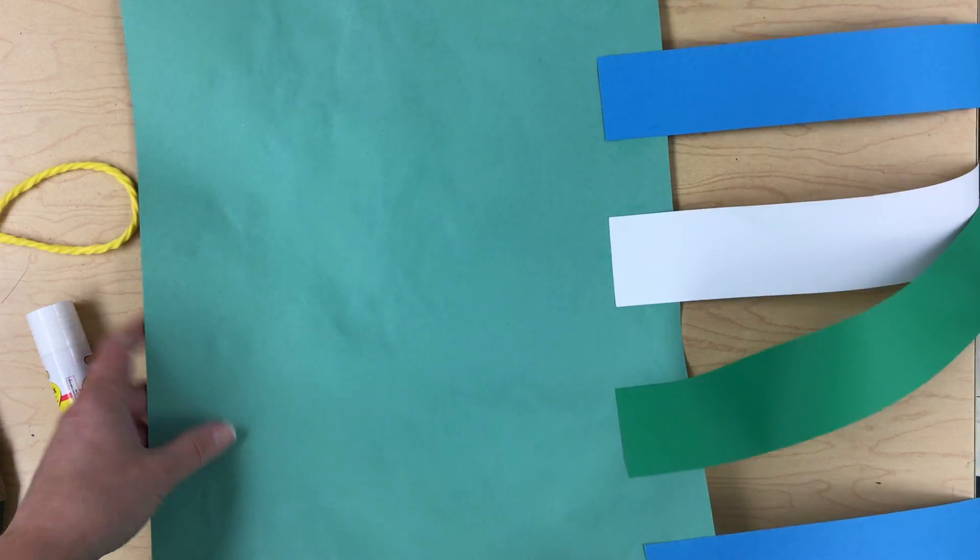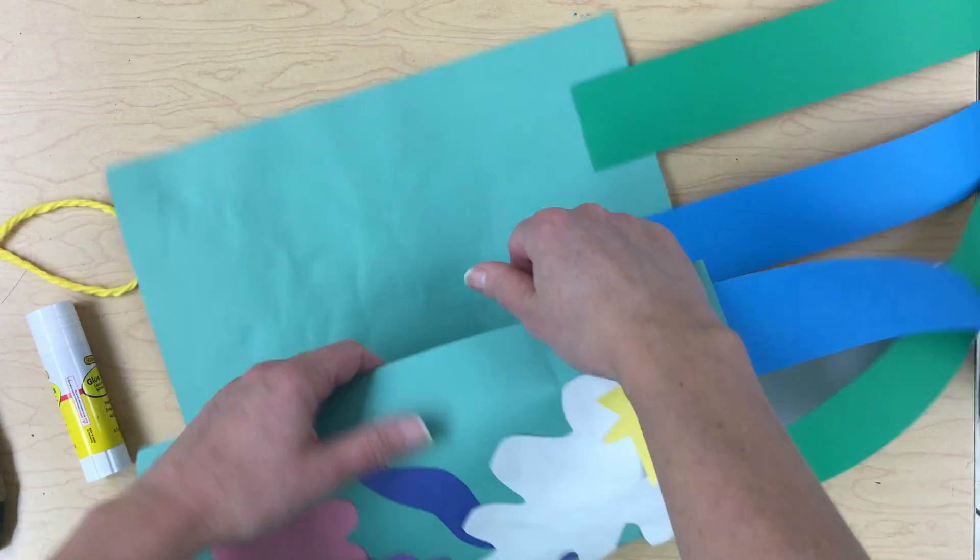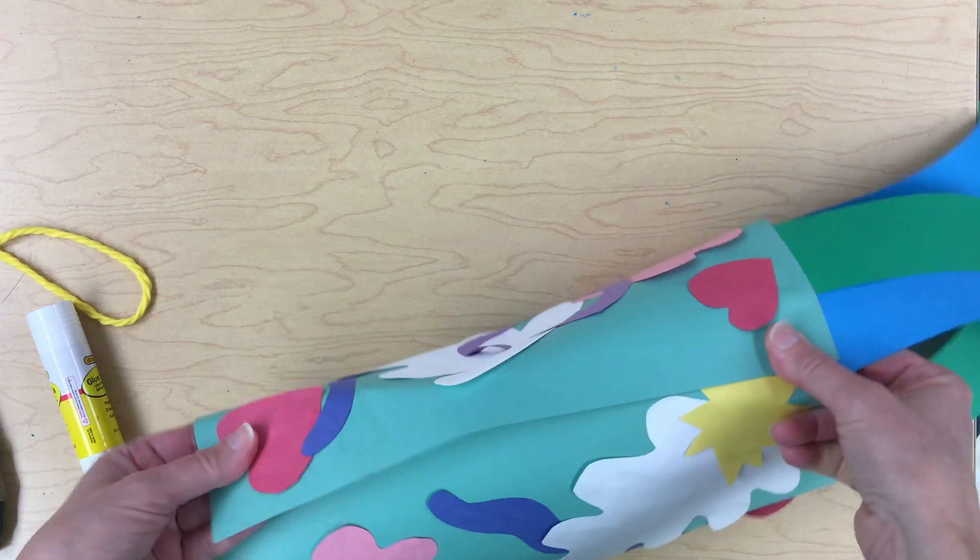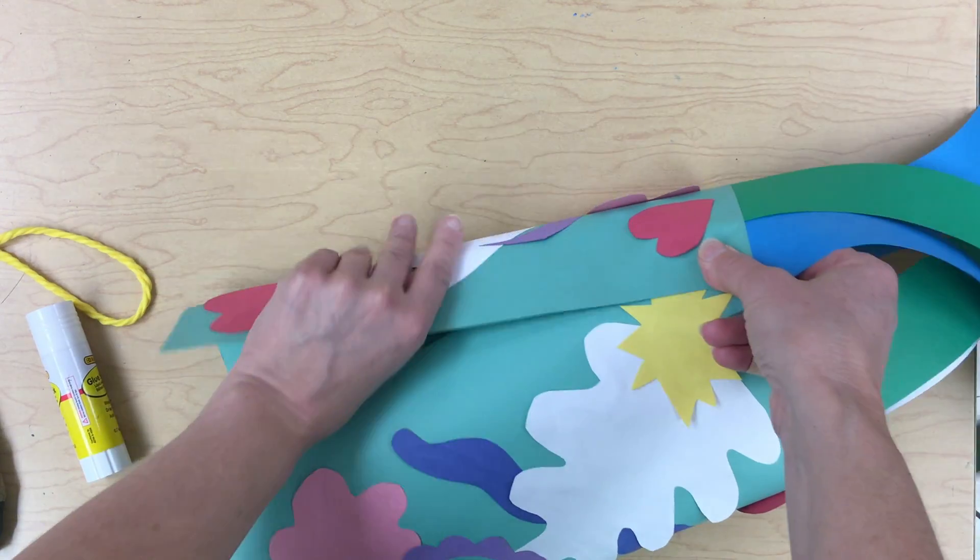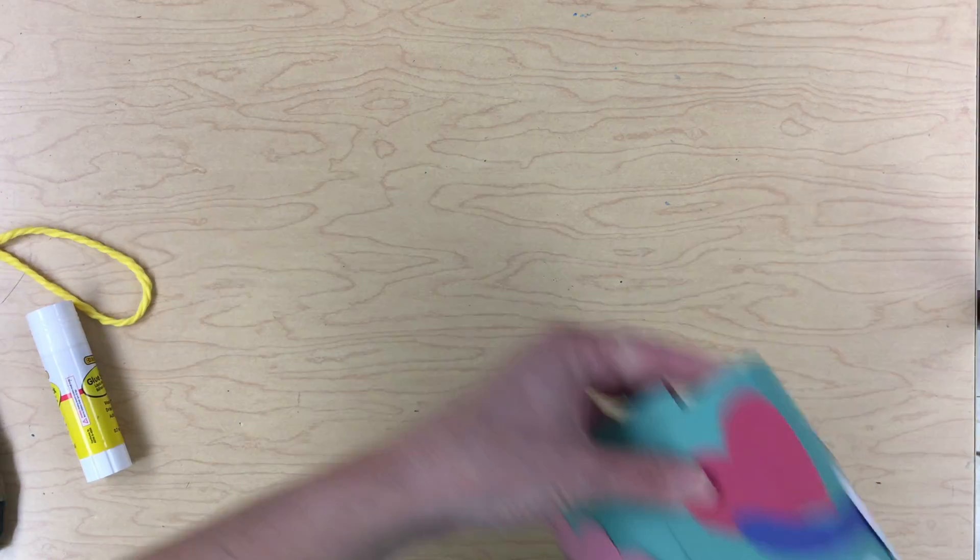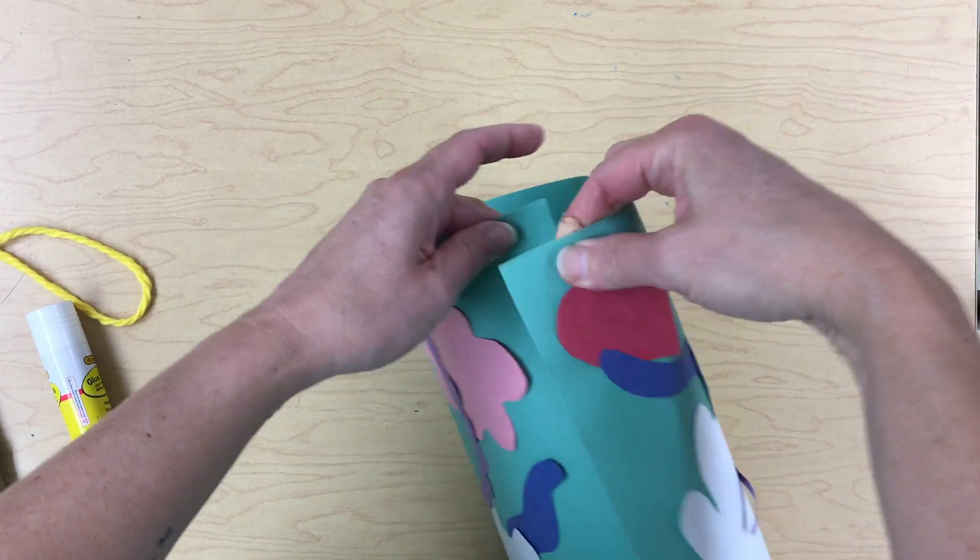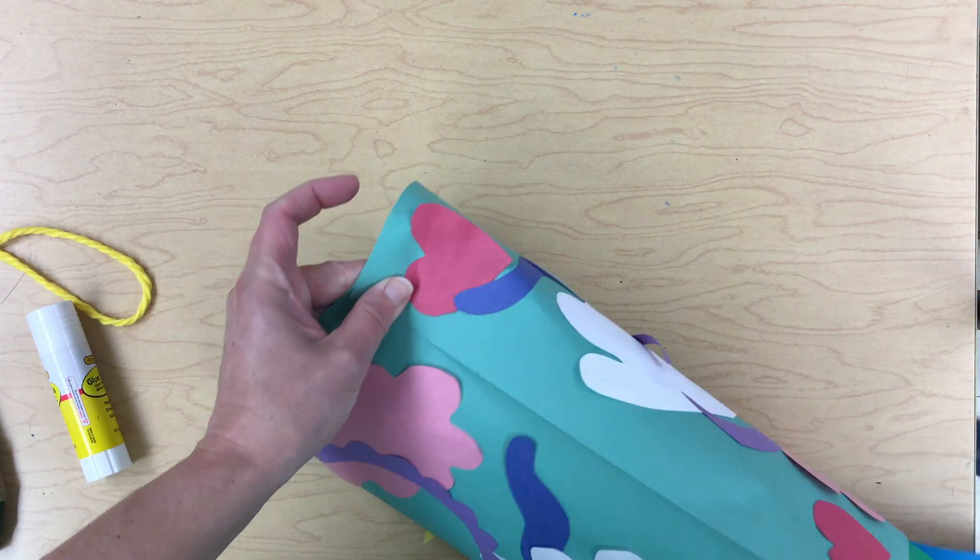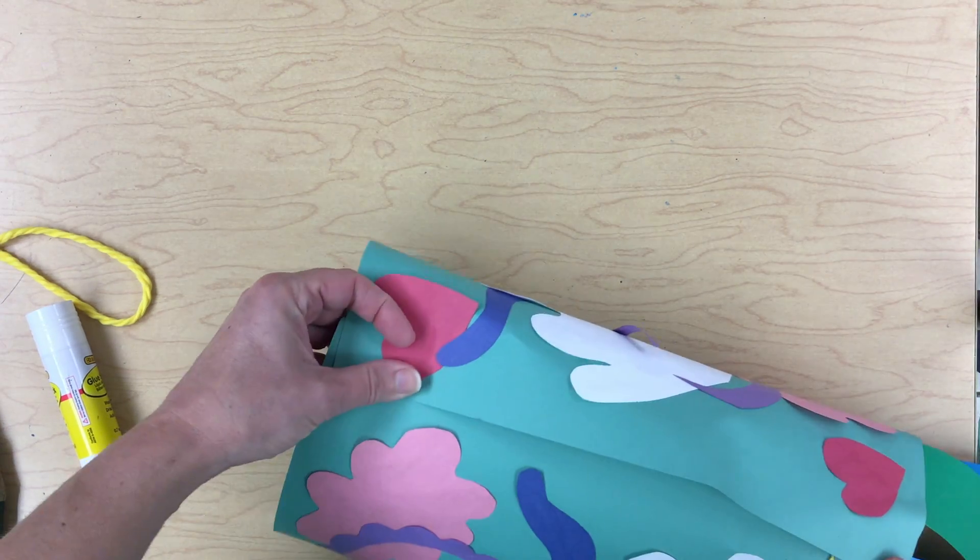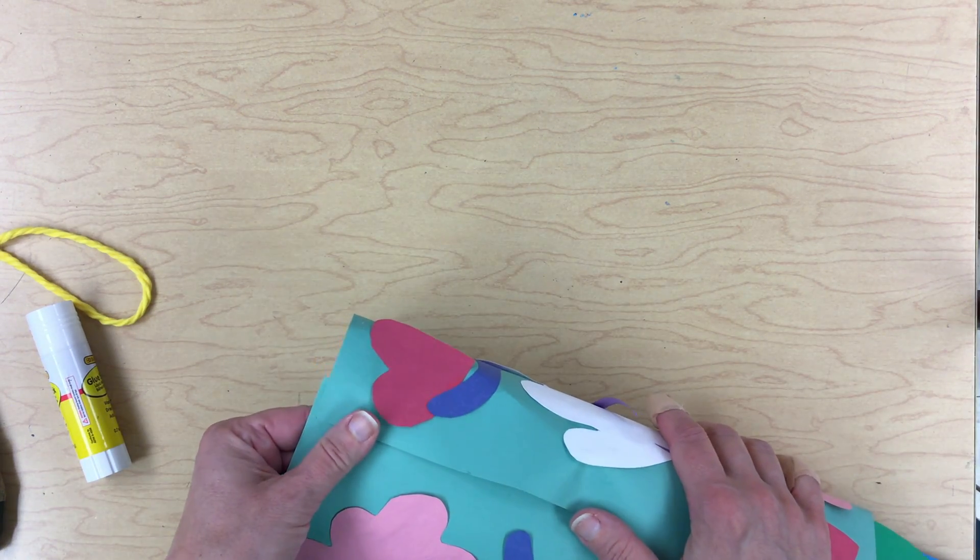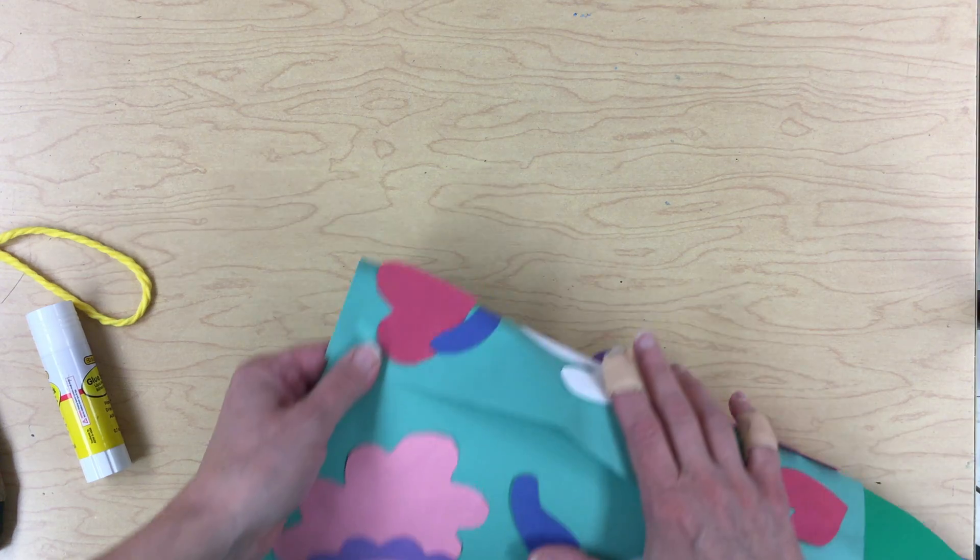Our objective is we are going to take our windsock and turn it around into a circle. One of the ends is going to go on top of another like this, and you want them to overlap by at least an inch, just so that they hold really securely.